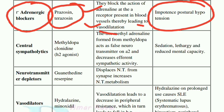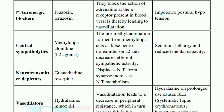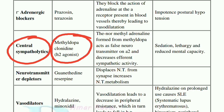Hypotension is the main side effect of alpha adrenergic blockers. Next is central sympatholytics, which include methyldopa and clonidine — alpha-2 agonists. The nor-methyladrenaline formed from methyldopa acts as a false neurotransmitter on alpha-2 receptors and decreases the afferent sympathetic activity.